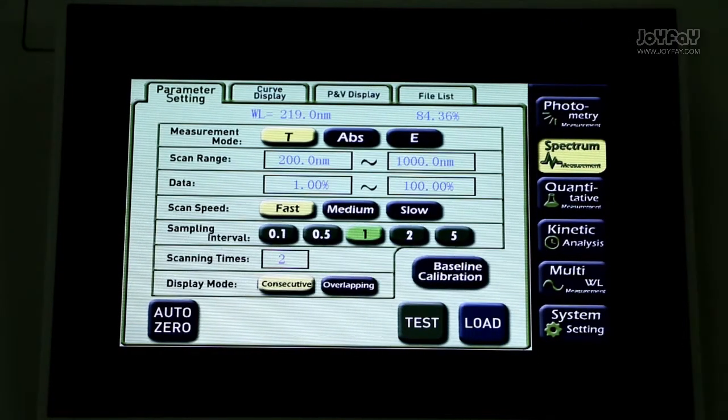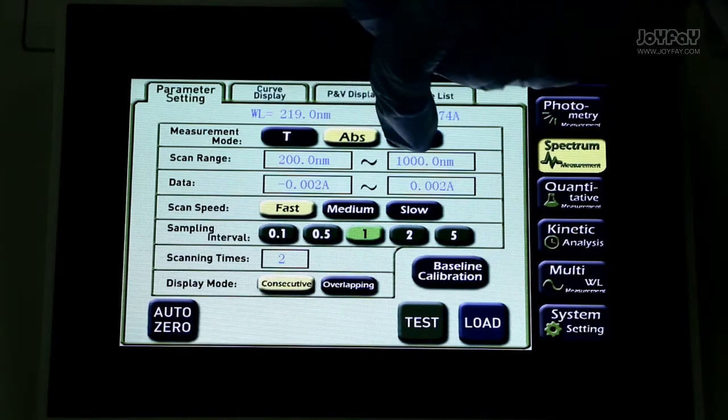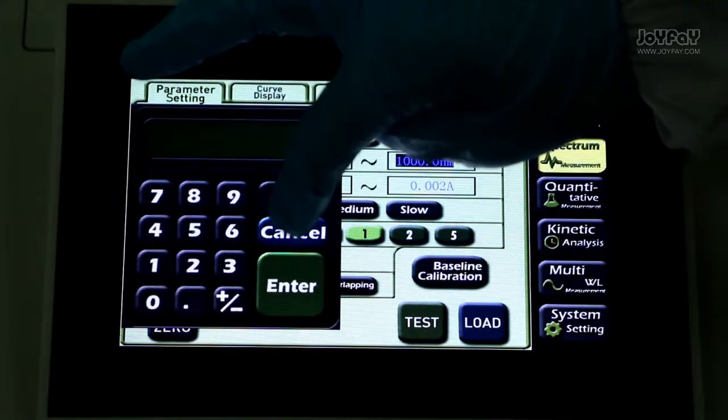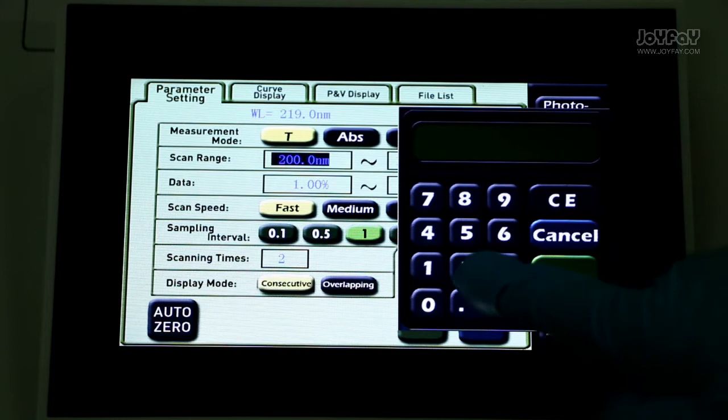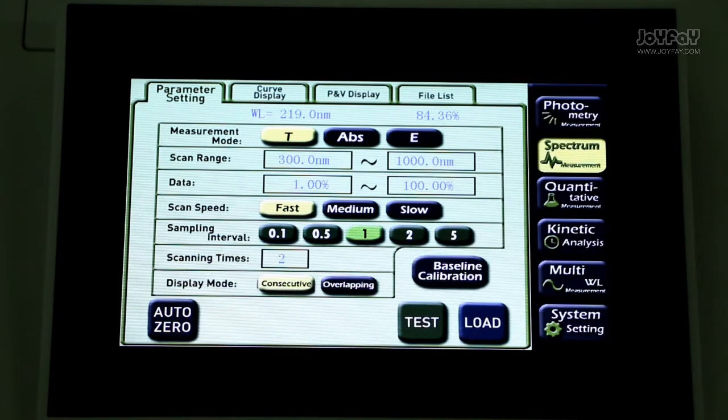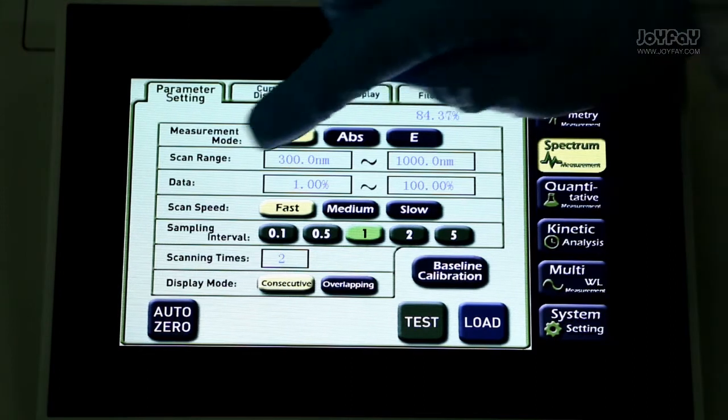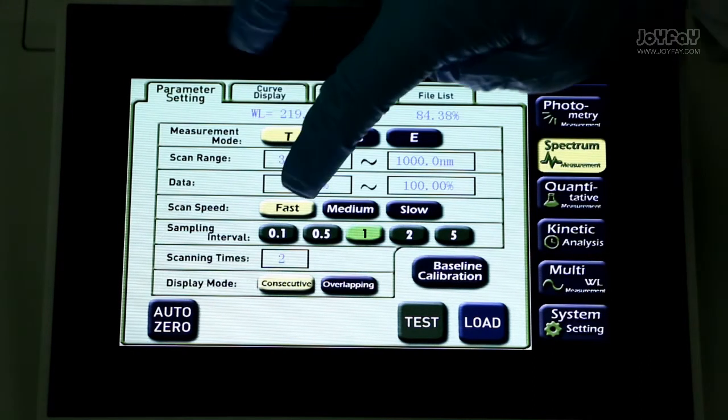Let's come to the first tag. Here are three measurement modes for you to choose, and we choose Mode T as example. Press the blank box beside scan range. Enter the wavelength range you need. Press the blank box beside data and enter what you need.